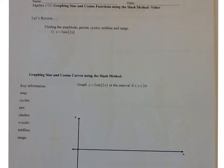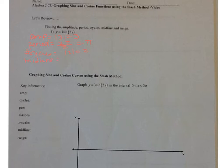Let's go over a couple of the key features again from yesterday. The amplitude, in this case, is the absolute value of 3, which is 3. The period is 2 pi over b, which is 2, and that is pi. The number of cycles is the absolute value of b, which is 2. The midline is what is being added or subtracted at the end. Since there's nothing added or subtracted, it is just y equals 0.